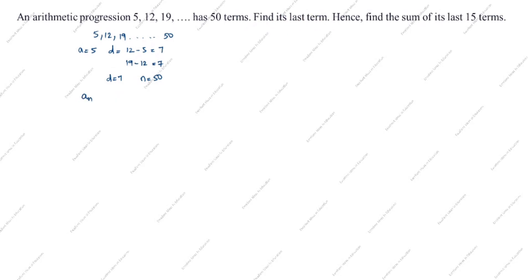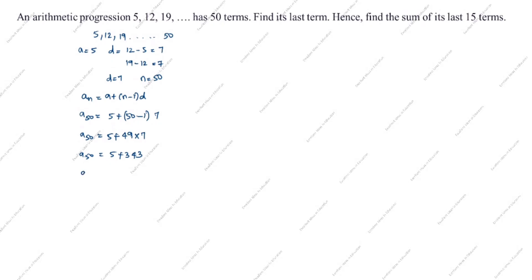What is the formula? aₙ is equal to a plus (n minus 1) into d. The last term means the 50th term. So a₅₀ is equal to a is 5 plus n is 50 minus 1, into d is 7. a₅₀ is equal to 5 plus 49 into 7, which is 343. a₅₀ is equal to 348. The last term of the AP is 348.